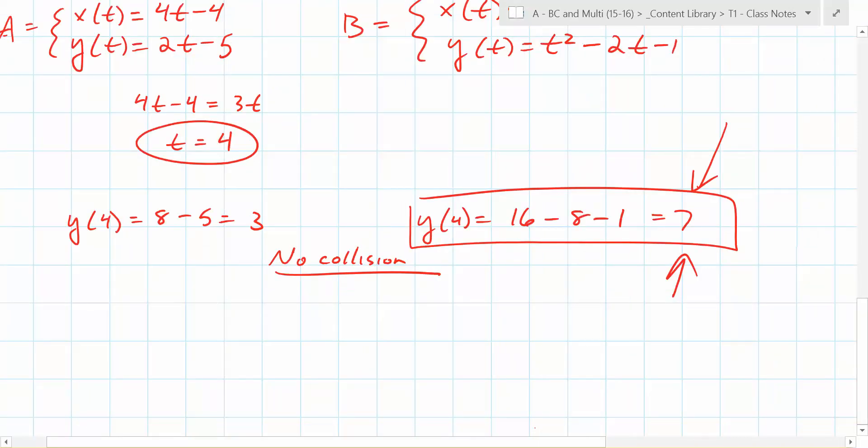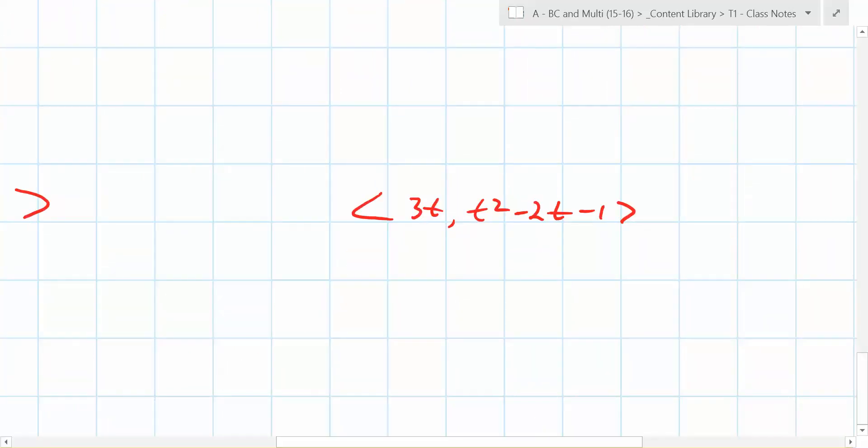The right side is always going to be what? 7. 7, right? Correct? So 2 times 4 minus k has to equal what? 7. 7. Yes. Correct. So what does k have to be? 1.